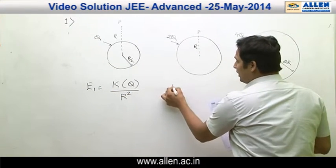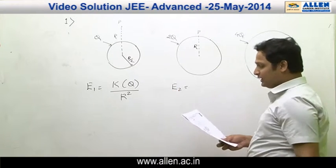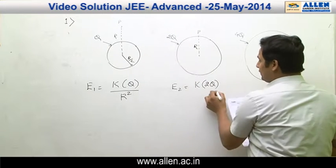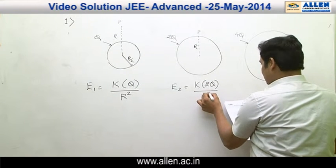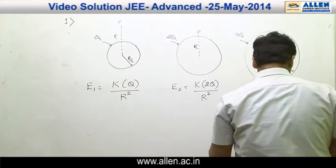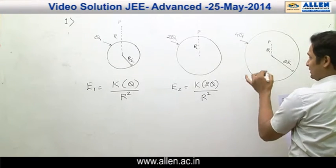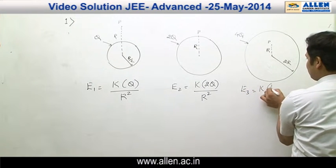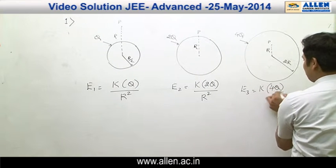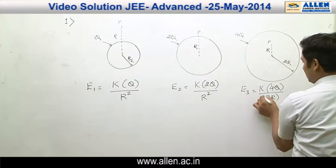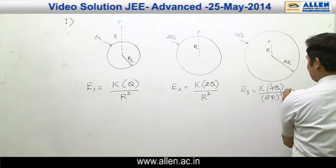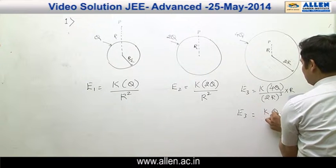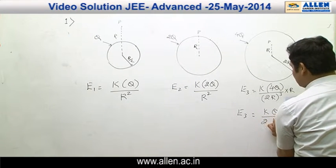In the second case, point P is at the surface, so electric field E2 will be K·2Q divided by R squared. In case 3, point P is inside the sphere, so electric field E3 will be K·4Q divided by (2R)² times R, giving E3 equal to K·Q divided by 2R squared.